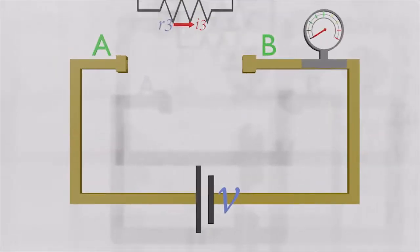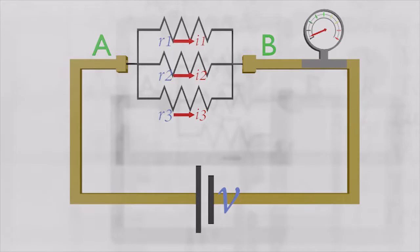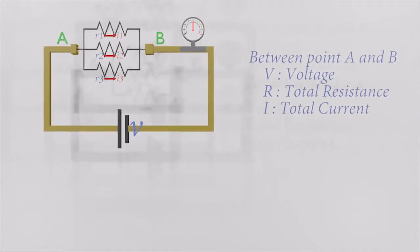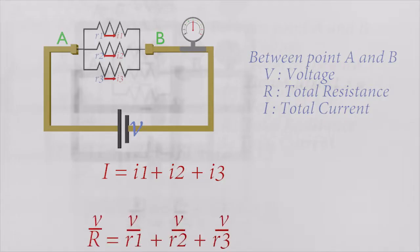We can keep adding resistors and continue this for more parallel resistors. For three parallel resistors, we can build an equation like this.